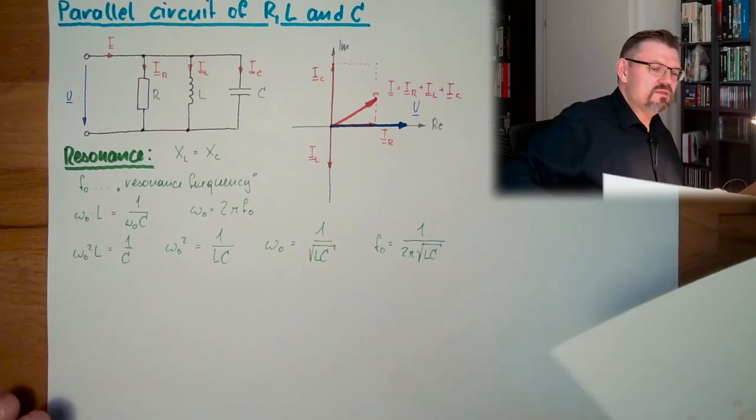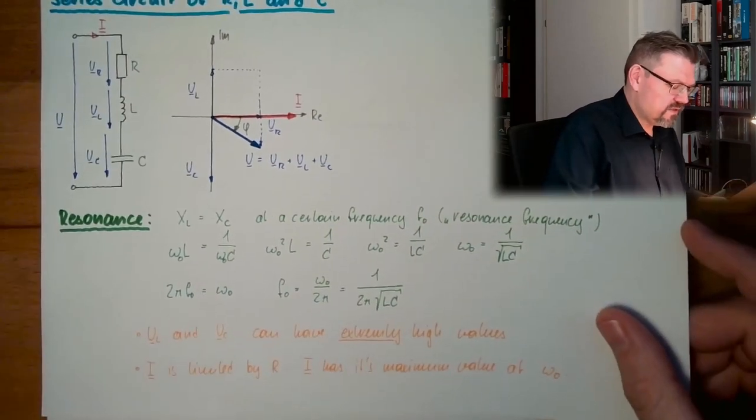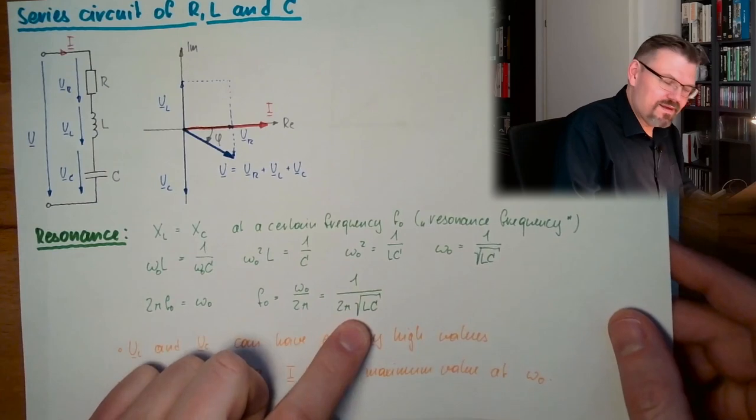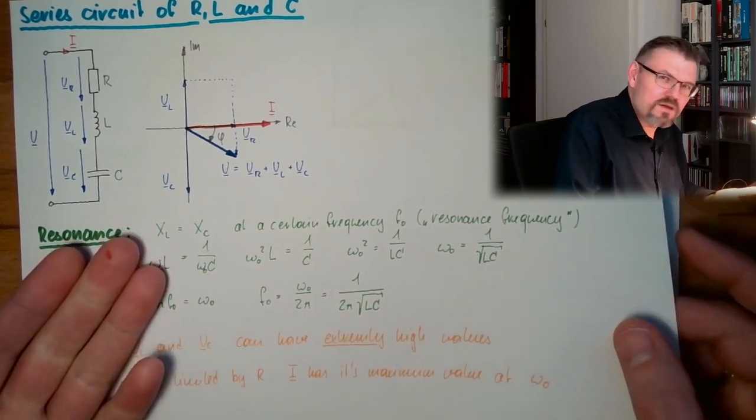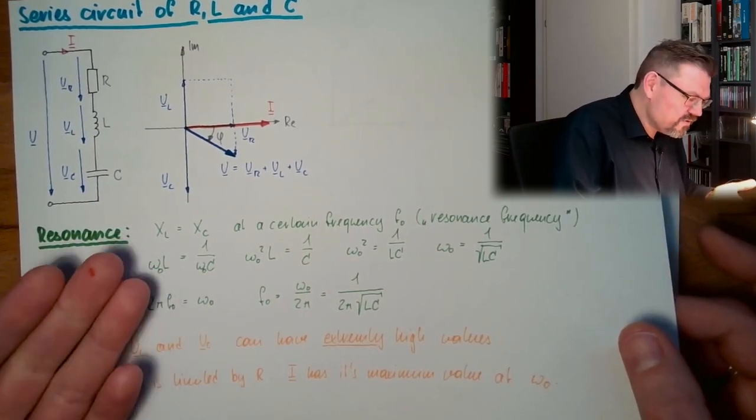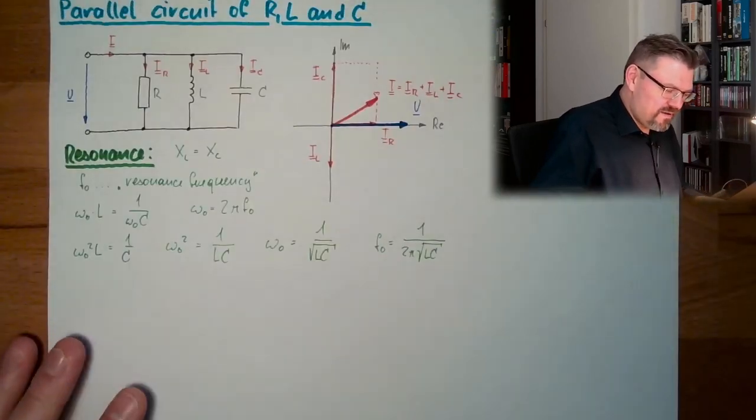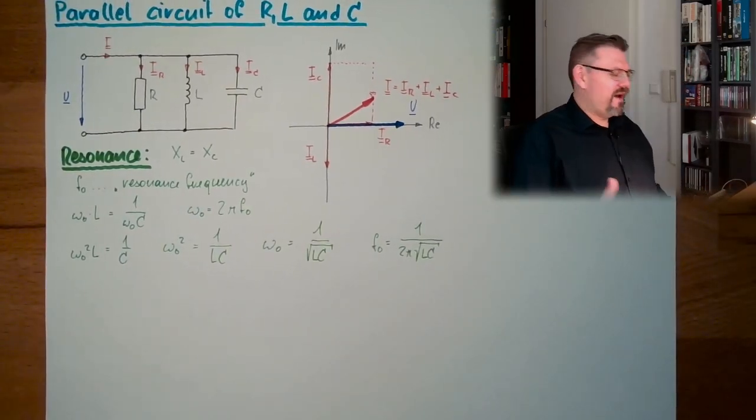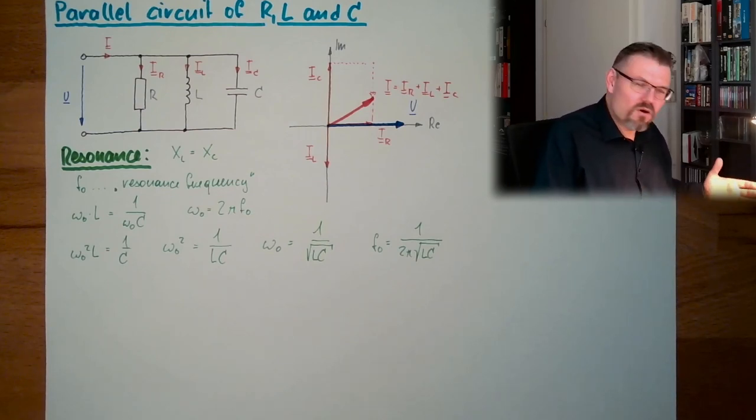Let's compare this to our series resonance circuit. It's the same. It's the same condition. Why should it be different? It's the same condition there. However, we have different findings. What are the findings? What is this causing?